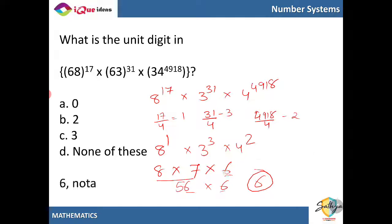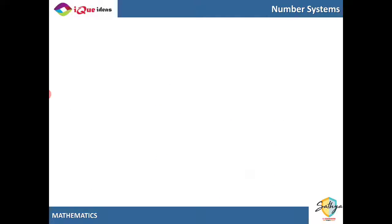So from the given options the last digit will always be equal to 6. So that's pretty much the end of finding units place digit.